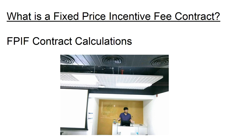When a contract has a share ratio for an incentive fee, the first number is what the buyer keeps and the second number is what the seller keeps. Both numbers must total 100%. A 70:30 share ratio means that if the actual cost comes in under target by $30,000, the buyer will keep $21,000 and the seller will keep $9,000.